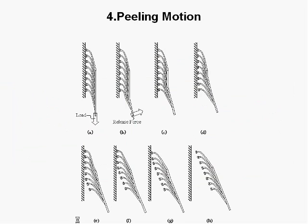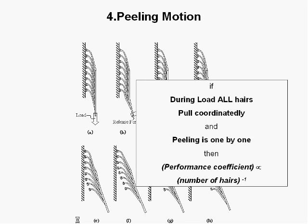Peeling motion: it is known that geckos detach from surfaces by peeling motion. The only difference with magnetic hair is the direction of the peeling, which is contrary. The point of peeling is that if during load phase all hairs pull coordinately and peeling is by contrary one by one, then we have that the performance coefficient, as we defined before, is inversely proportional to the number of hairs.